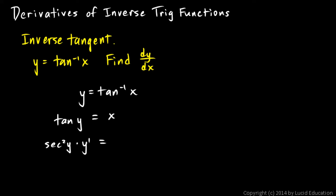And then the derivative of the right side, the derivative of x, is just 1. So now we can solve this algebraically for y prime. y prime is 1 over secant squared y.